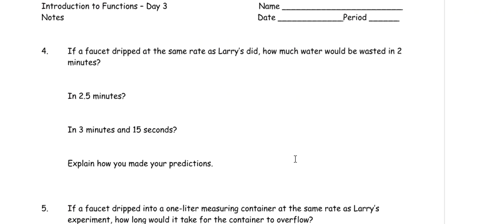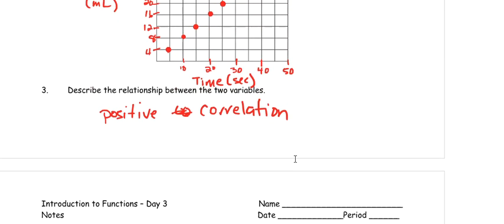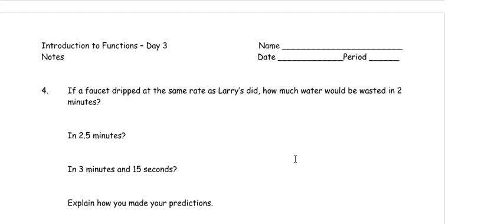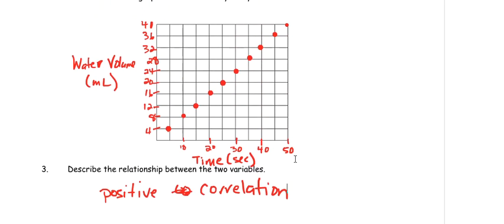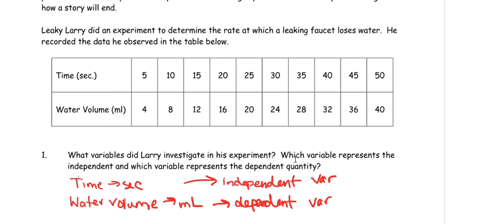Let's do number four. If a faucet dripped at the same rate as Larry's, how much water would be wasted in two minutes? Let's talk about creating an equation. Your lesson in class was talking about rate of change. The x's are increasing by five every single time, and the y's are increasing by four every single time. An equation really does help in this situation.